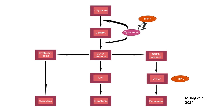The process begins with L-tyrosine, which is converted into L-dopa by the enzyme tyrosinase. This is the rate-limiting step in melanin production. L-dopa can further enhance tyrosinase activity, amplifying the production of downstream intermediates.